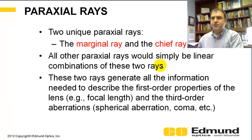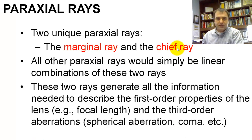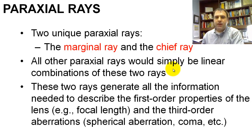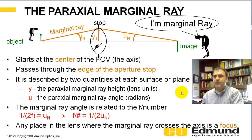For paraxial rays, there are two unique rays: the marginal ray and the chief ray. All other paraxial rays are linear combinations of these two rays. These rays generate a lot of information about the optical system — first order like focal length and field of view, as well as third order like spherical aberration, coma, and astigmatism.